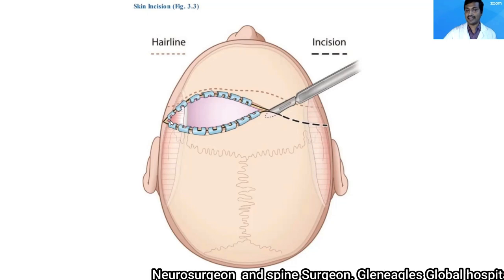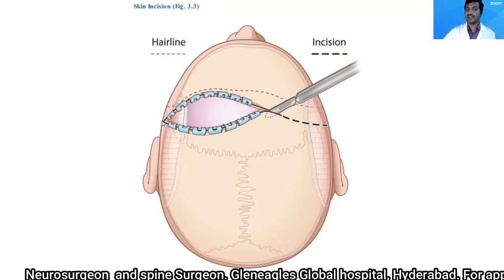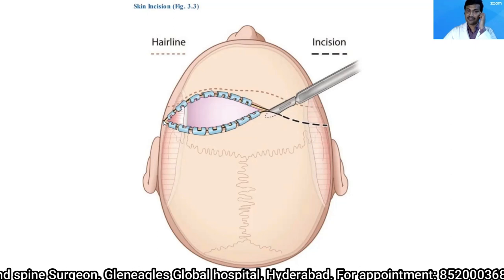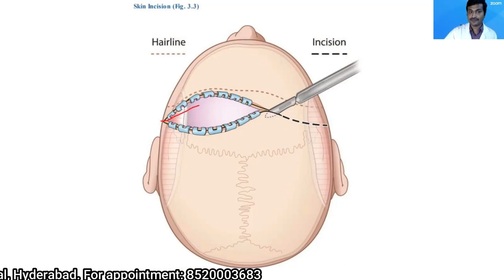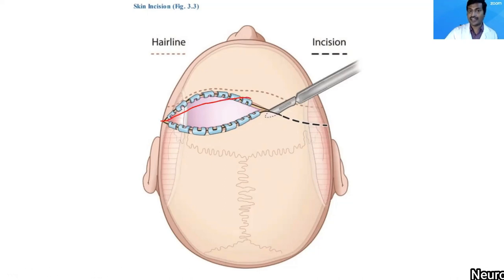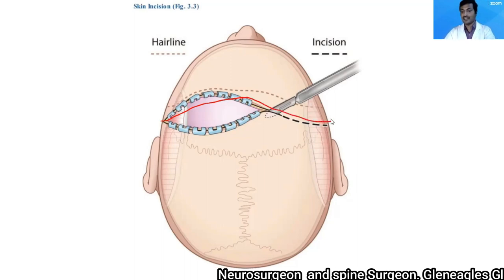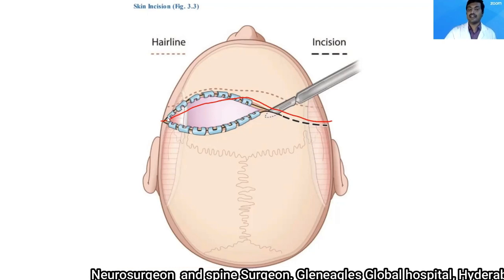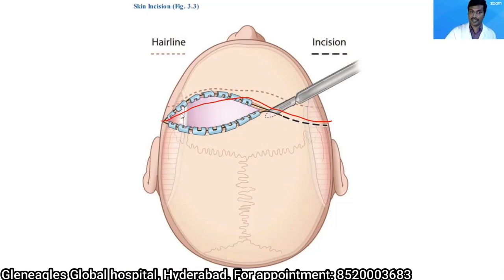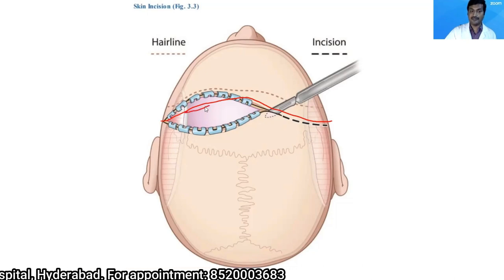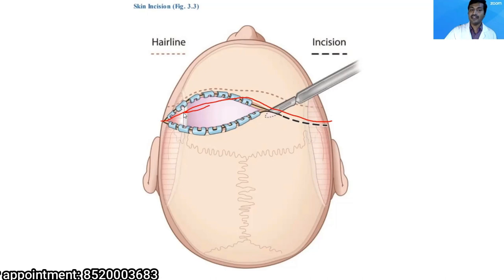We take a bicoronal skin incision starting from the zygomatic arch at least one centimeter in front of the tragus, running along just behind the hairline to the midline, then mirroring to the opposite side. I use a number 15 blade to incise the skin down to the pericranium above the superficial temporal line, and to the temporalis fascia below it.